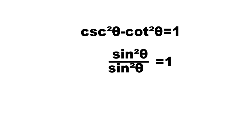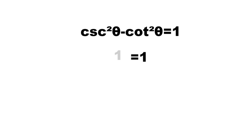1 minus 1 is 0, so sine squared theta over sine squared theta is equal to 1, and finally 1 is equal to 1.